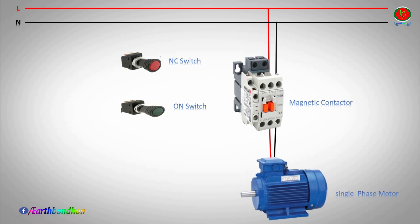NC switch main line input, NC switch output. ON switch to magnetic contactor connection. ON switch output to A1 coil connection.